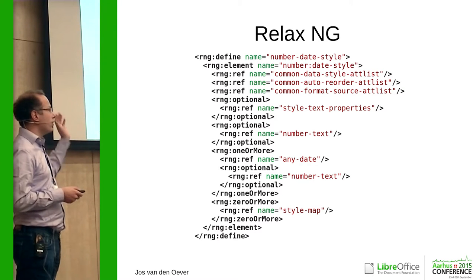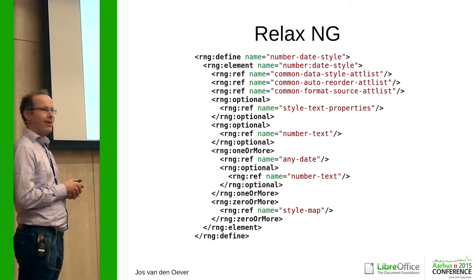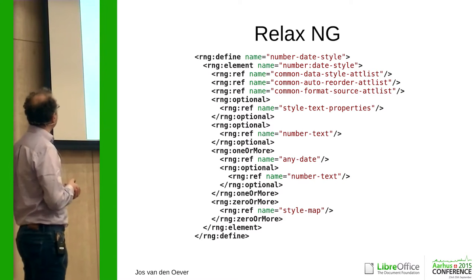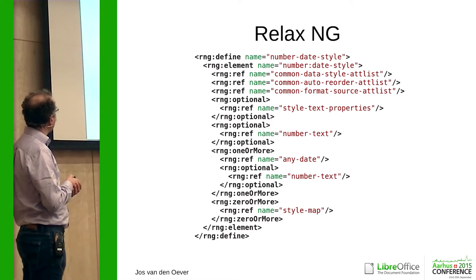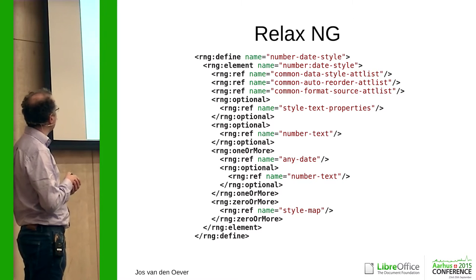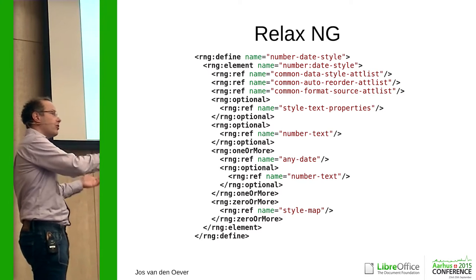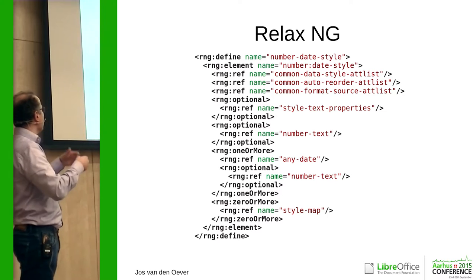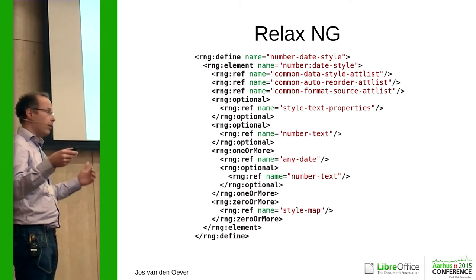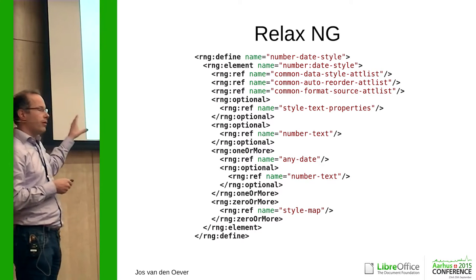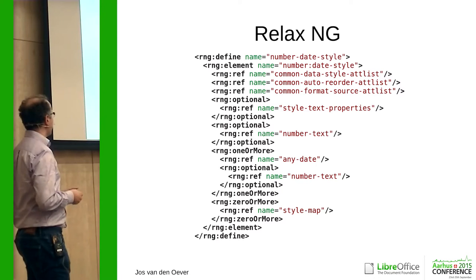The RelaxNG schema, which we use to specify the ODF file format. We are defining something called number date style, which is this element. This element can have, for example, style text properties, but they're optional. It can have a number text element, which is also optional. But what's not optional is one or more of any date. Any date is defined somewhere else, and this can be a year or a month — components of a way to style a date. This kind of XML defines how the ODF XML is written.